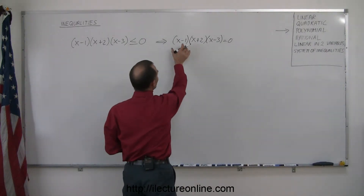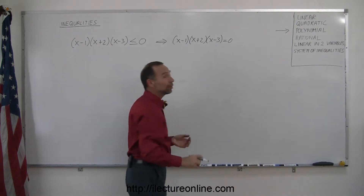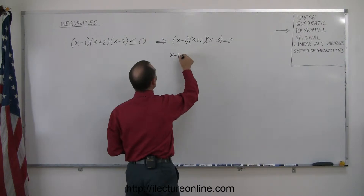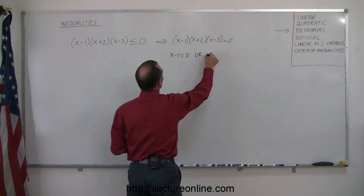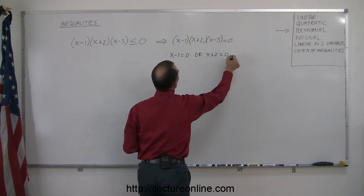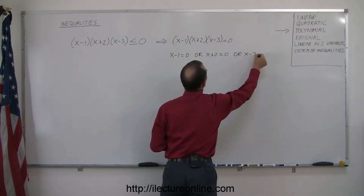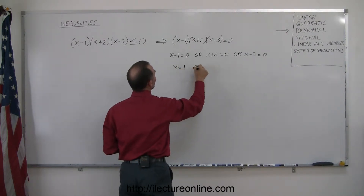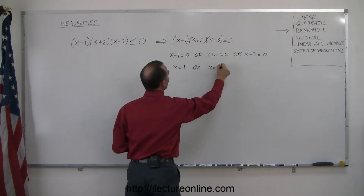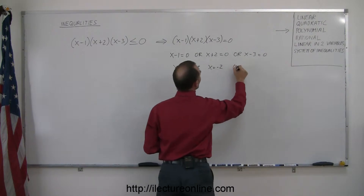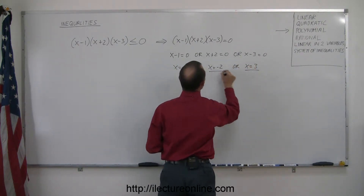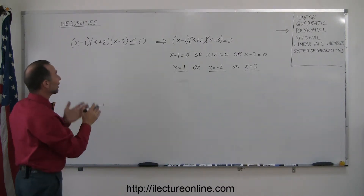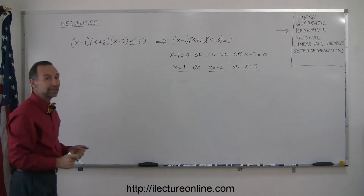If we multiply three binomials together and get 0, that can only happen if any one of those three factors is 0. In other words, x minus 1 equals 0, or x plus 2 equals 0, or x minus 3 equals 0. So x equals 1, x equals negative 2, or x equals 3. We have three values for x that delineate the regions we're going to test to see if they satisfy the inequality.